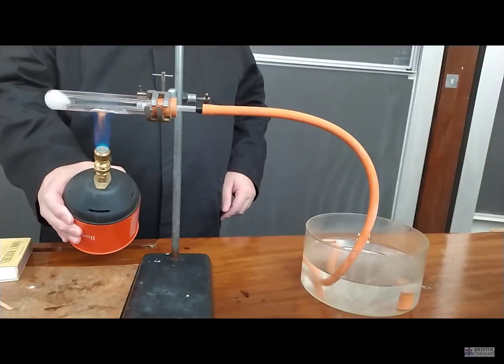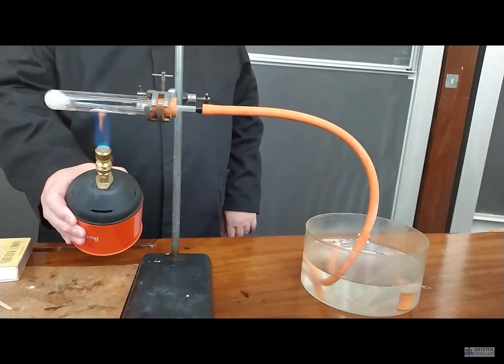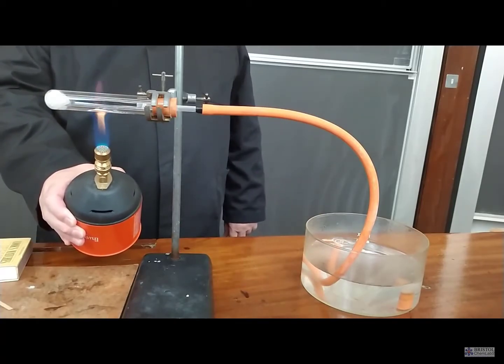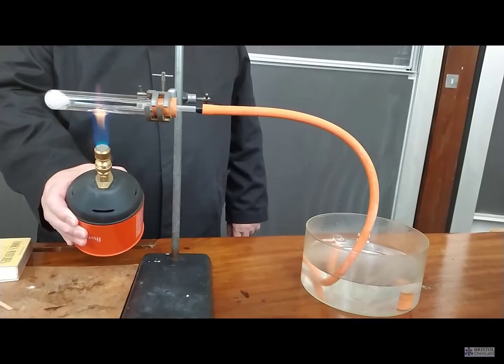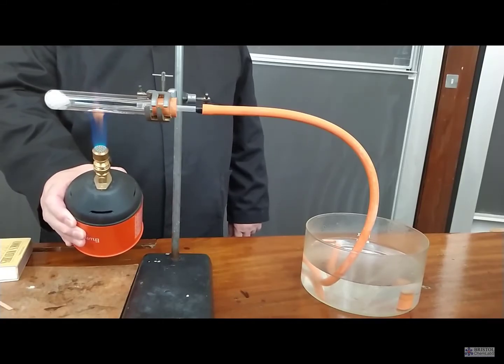So, using a suitable Bunsen burner with a long lead, or a portable Bunsen as I'm doing here, heat the aluminium oxide strongly.